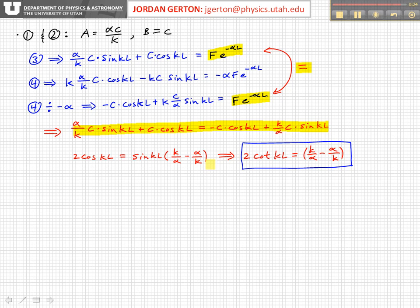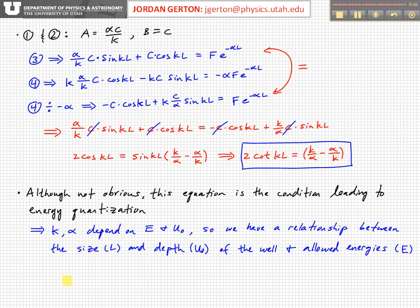So this is, it may not be obvious at this point, but in fact this equation right here gives us the condition leading to energy quantization, because k and alpha both depend on E and U naught, and now we have a relationship between the length of the box and U naught and E.